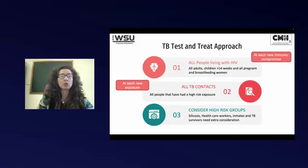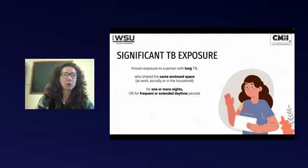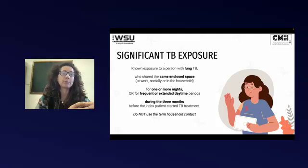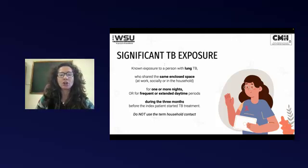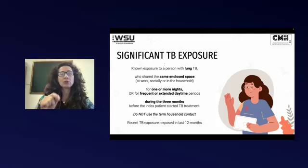There's also specific consideration for high-risk groups beyond HIV in terms of providing preventive cover. The definition of significant TB exposure has been updated — it's anybody who's shared the same enclosed space for one or more nights or frequent or extended daytime periods, and daytime periods are becoming quite important. Everybody exposed to a TB patient in the last three months would be considered a significant TB exposure. We no longer use the term 'household contact.' When asking a patient about their own exposure, you ask about the last 12 months; when identifying who a TB patient has exposed, you look at the last three months.